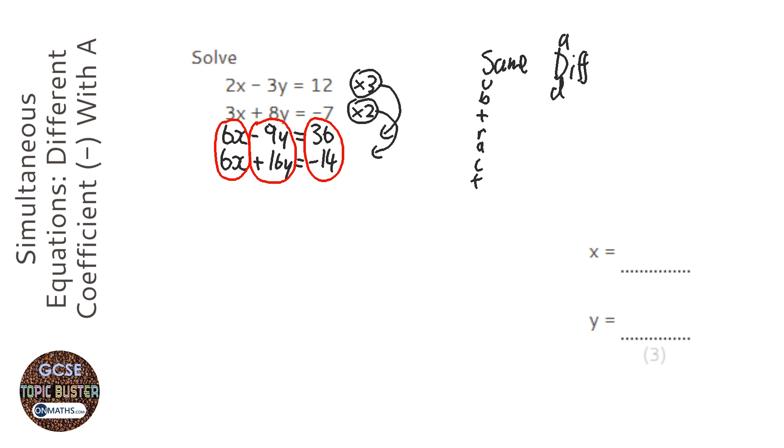So looking at the 6x's, we have the same signs, they're both positive, so we are going to subtract. OK, so 6x take away 6x is nothing, which is good because we want to get rid of that.